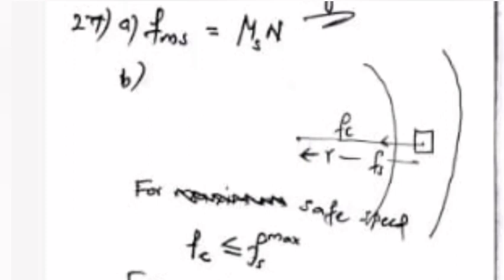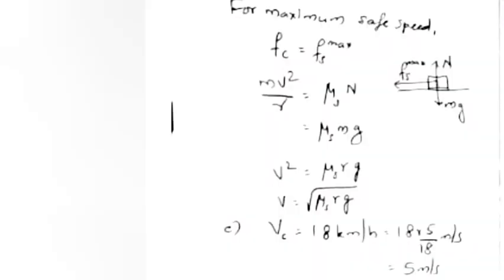Answer: F_s max equals mu_s times N. For safe speed, f_c less than or equal to f_s max. For maximum safe speed, f_c equals f_s max. Therefore mv squared by r equals mu_s times mg. v squared equals mu_s times rg, so v equals root of mu_s times rg.